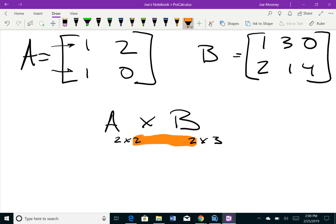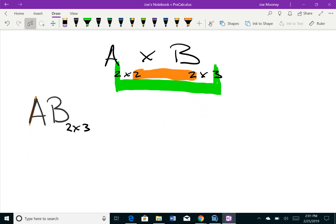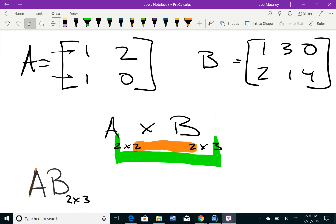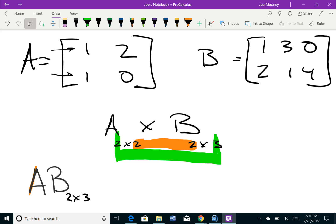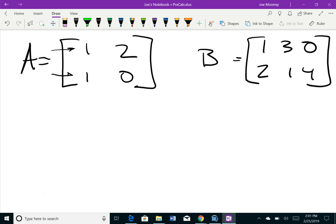Matrix multiplication is possible if these are the same - the columns for the first and the rows of the second. Not only that, the dimensions of the product matrix AB will end up being the rows from the first and the columns from the second. So AB's matrix is going to end up being 2×3.